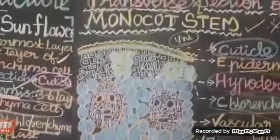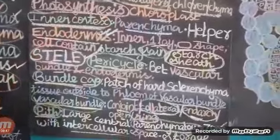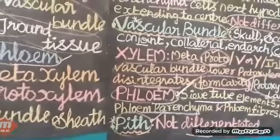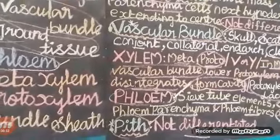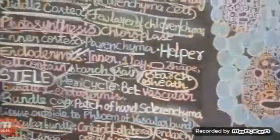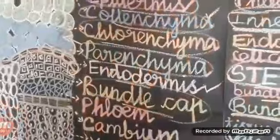Pith is present in dicot and absent in monocot. Medullary rays, which means a cellular structure, are present in dicot and absent in monocot.